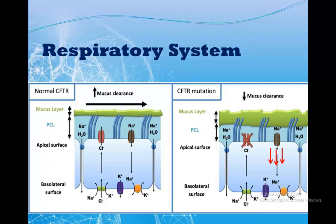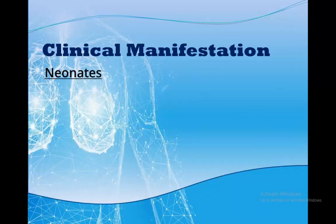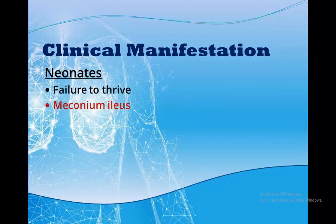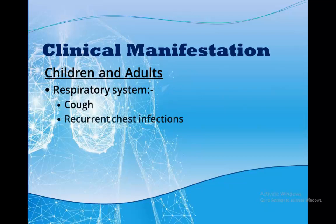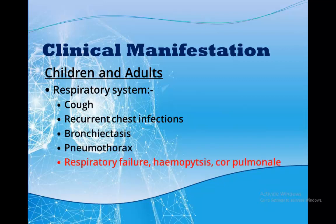A similar process occurs in other organs like the intestines, pancreas, gallbladder and salivary glands. In newborns, symptoms may not appear immediately, but if they do, they may present with failure to thrive, meconium ileus and rectal prolapse — any patient with a history of meconium ileus is cystic fibrosis until proven otherwise. In children and adults they may present with cough, recurrent chest infections due to bacterial colonization in the thick mucus, bronchiectasis and pneumothorax. In advanced cases: respiratory failure, haemoptysis and cor pulmonale.